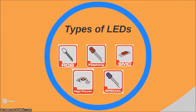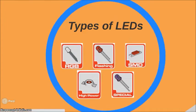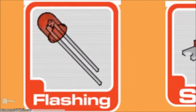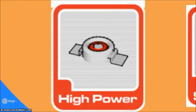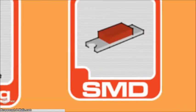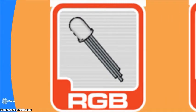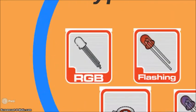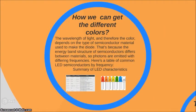LEDs have many types. The first is RGB, then flashing, SMD, high power, and special types — each with many different characteristics and applications. For example, an RGB LED is a single LED capable of producing red, green, and blue light. It has four leads, one for each color and a common cathode.